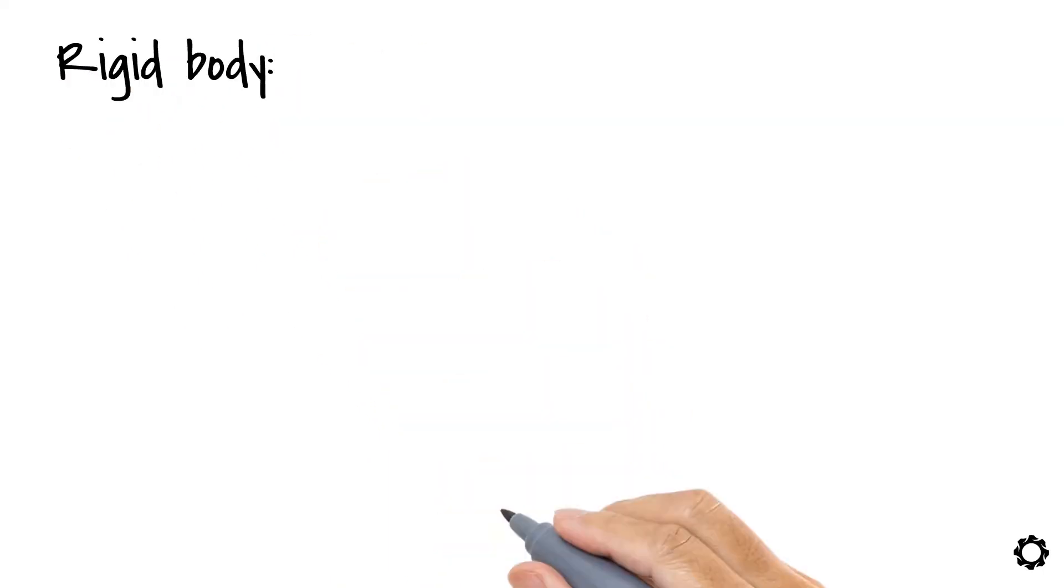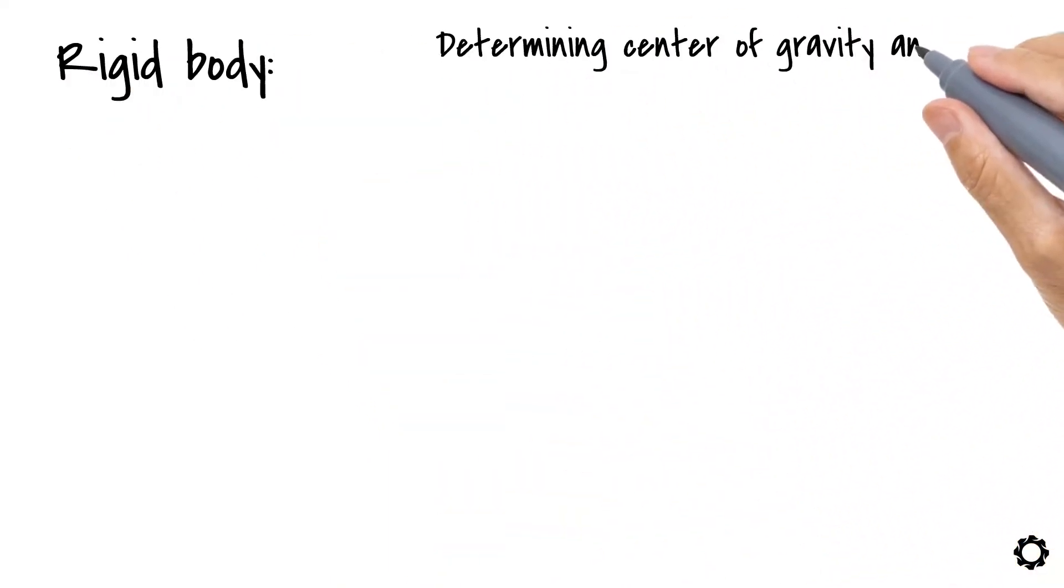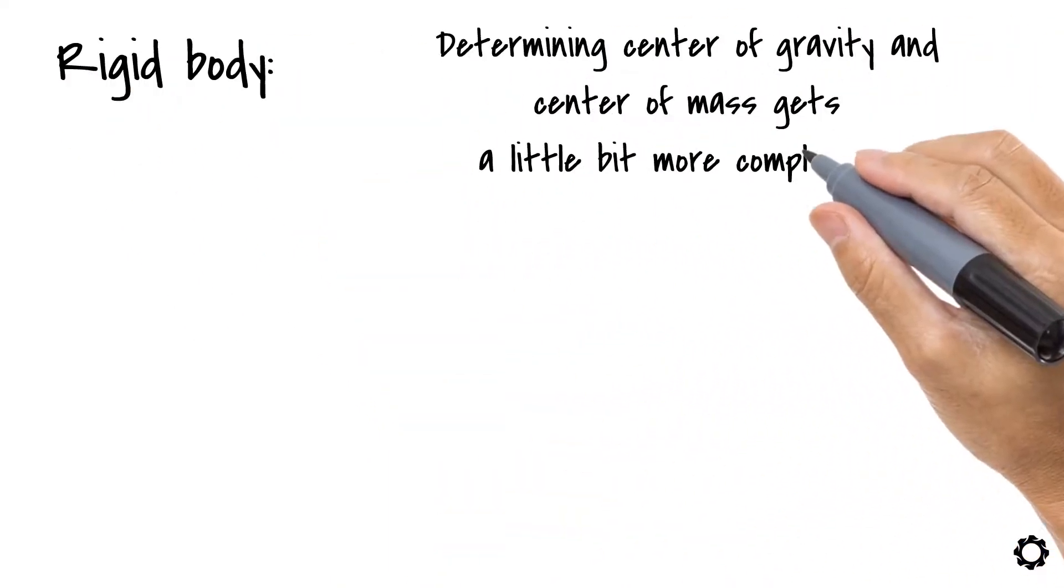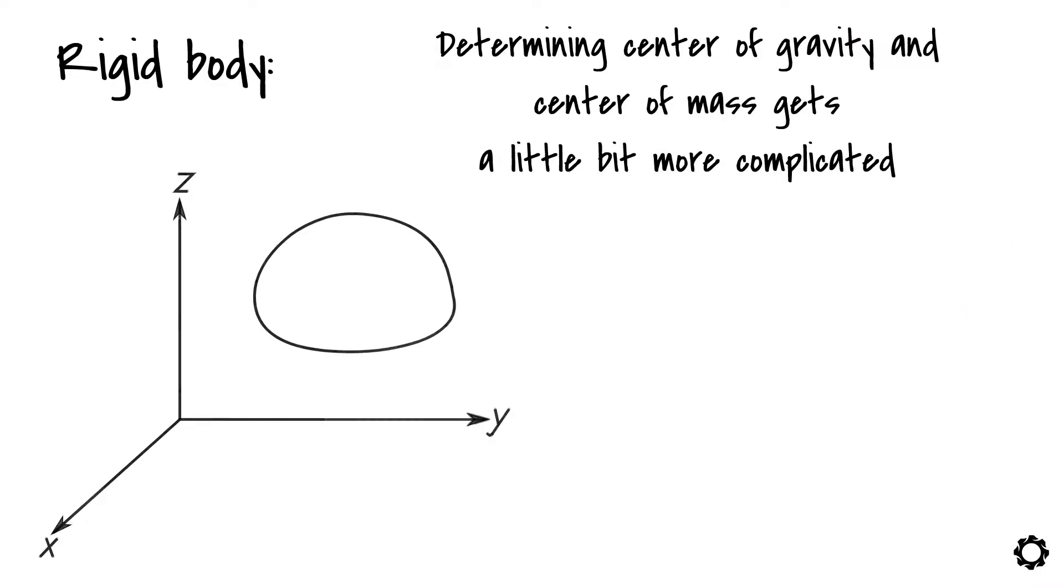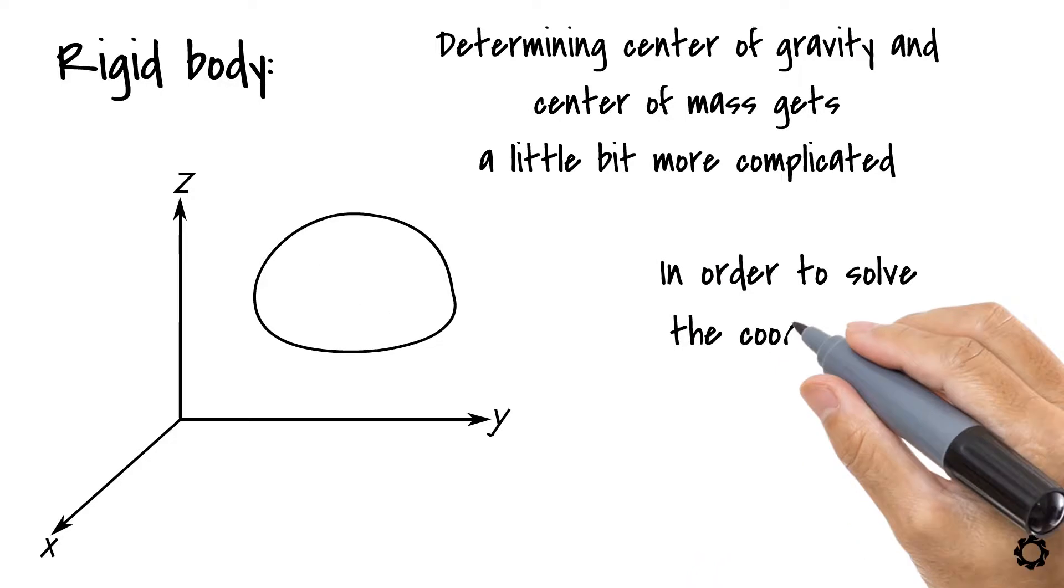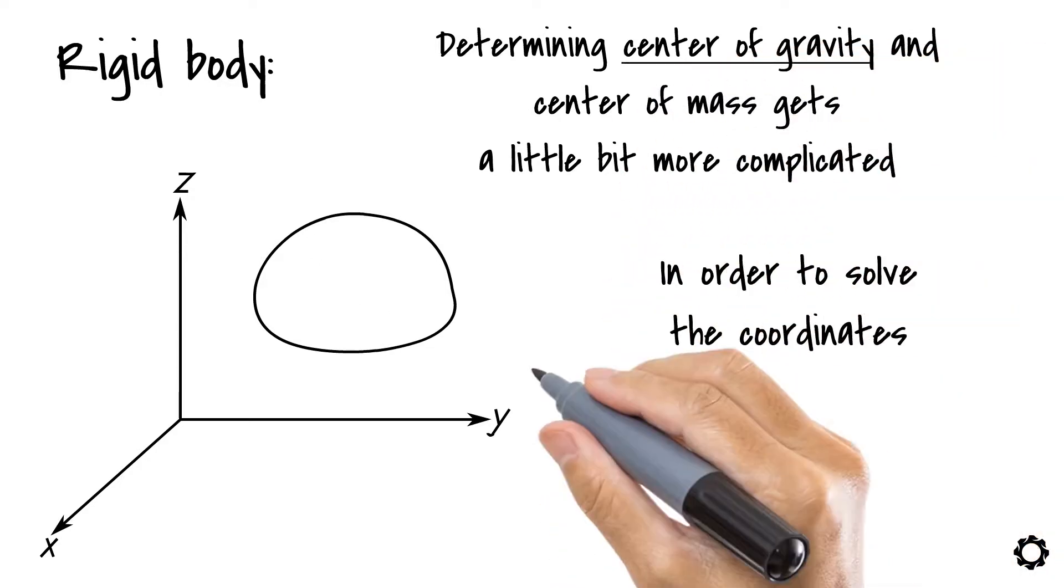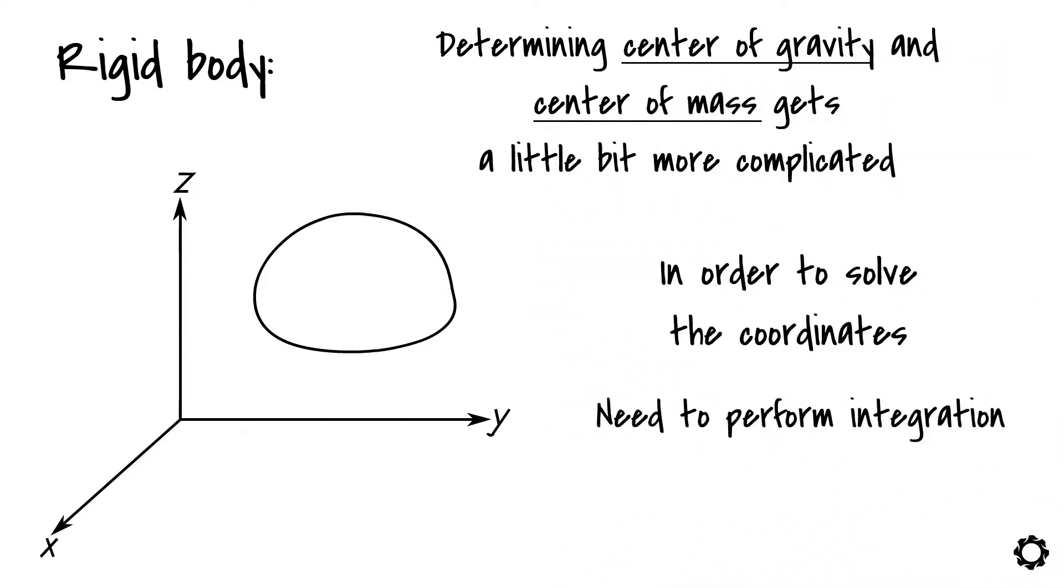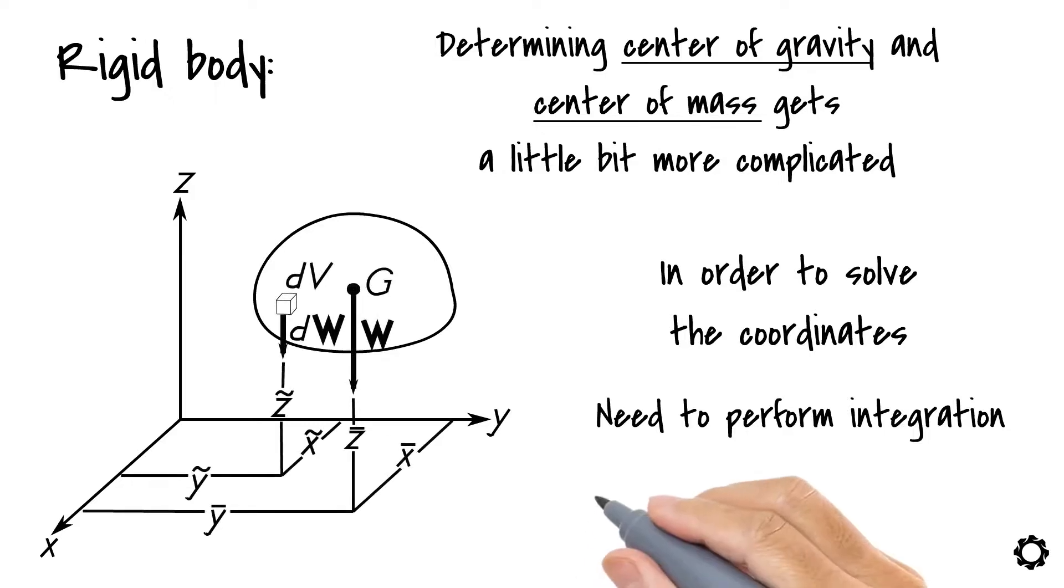In case of a rigid body, determining center of gravity and center of mass gets a little bit more complicated, because a rigid body consists of an infinite number of particles. Thus, in order to solve the coordinates of the center of gravity and the center of mass, we need to perform integration throughout the entire volume of a body, rather than use a discrete summation of the terms.